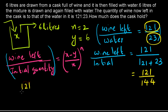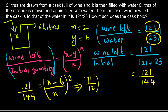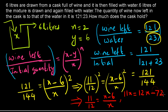Substituting: 121/144 = ((x - 6) / x)². Since 121/144 = (11/12)², we get 11/12 = (x - 6)/x. Cross-multiplying: 11x = 12x - 72, so x = 72. The capacity of the cask is 72 liters. Thank you for watching.